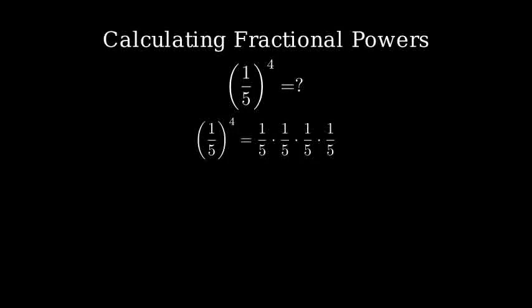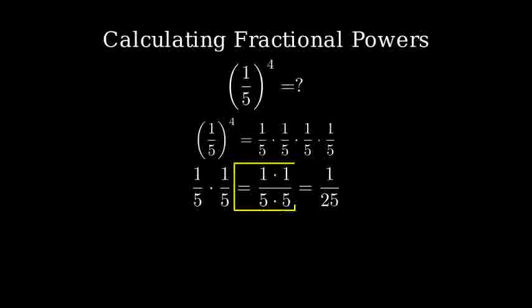Let's visualize this multiplication process step by step. First, let's multiply the first two one-fifths. One times one in the numerator is one, and five times five in the denominator is twenty-five.